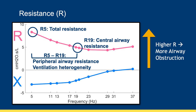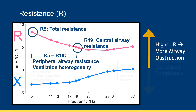Typically the difference between total and central airway resistance is small. However, a large difference between these two values can indicate increased obstruction in the small peripheral airways and variability in ventilation across lung regions.